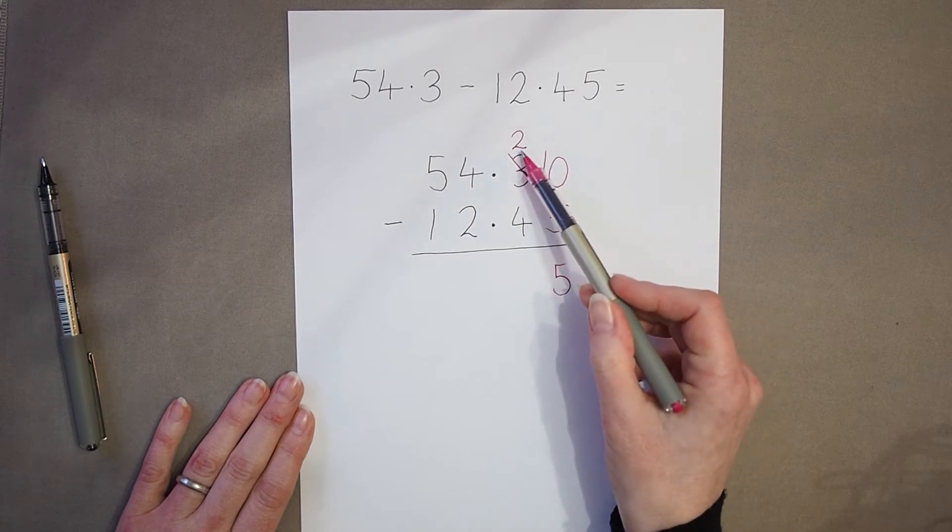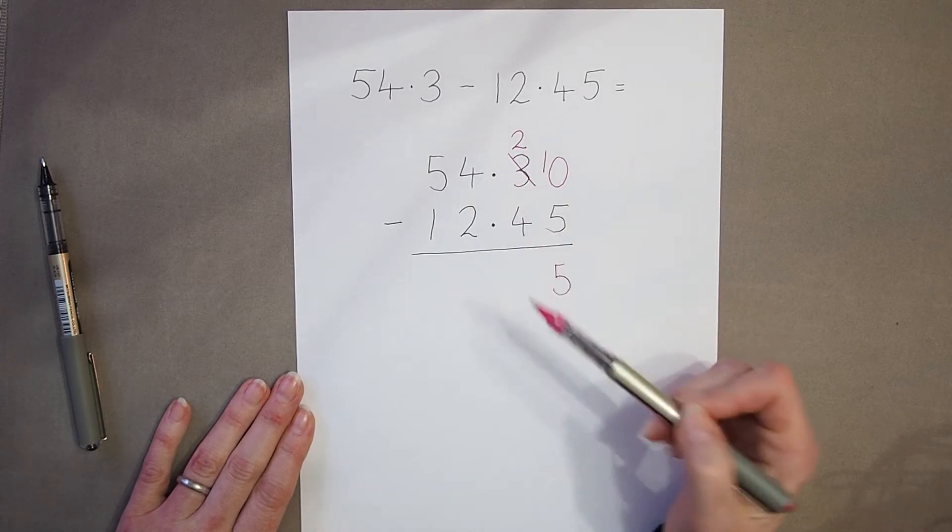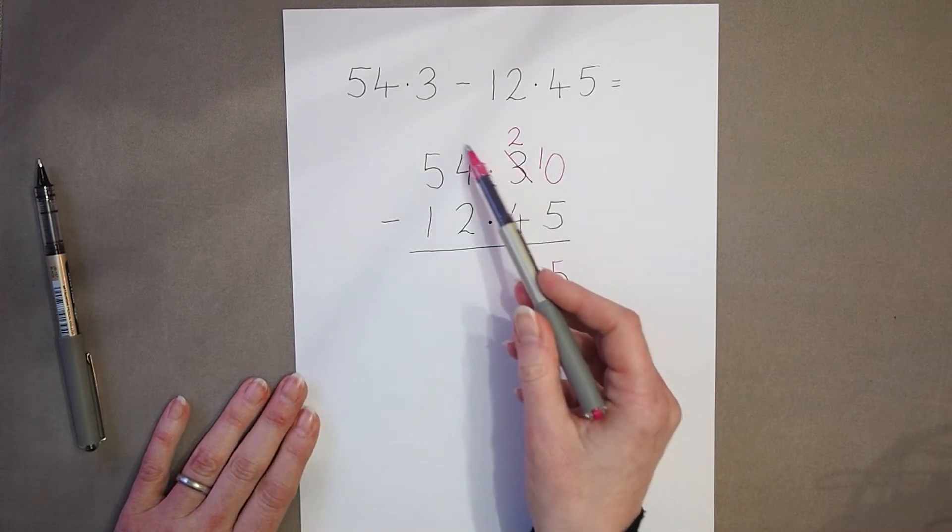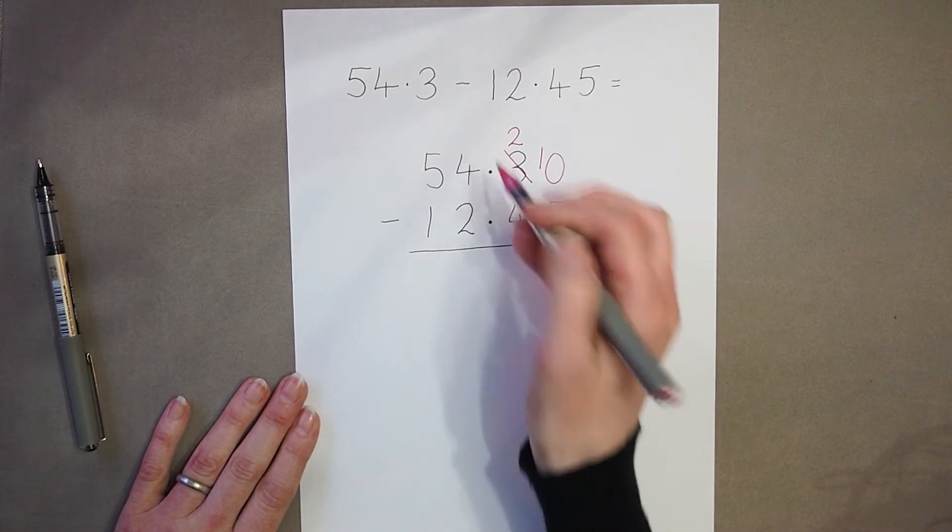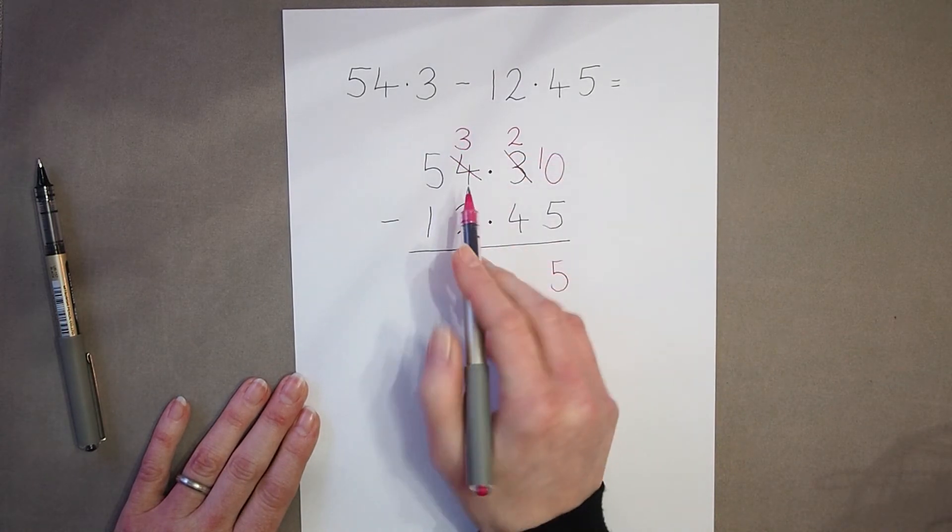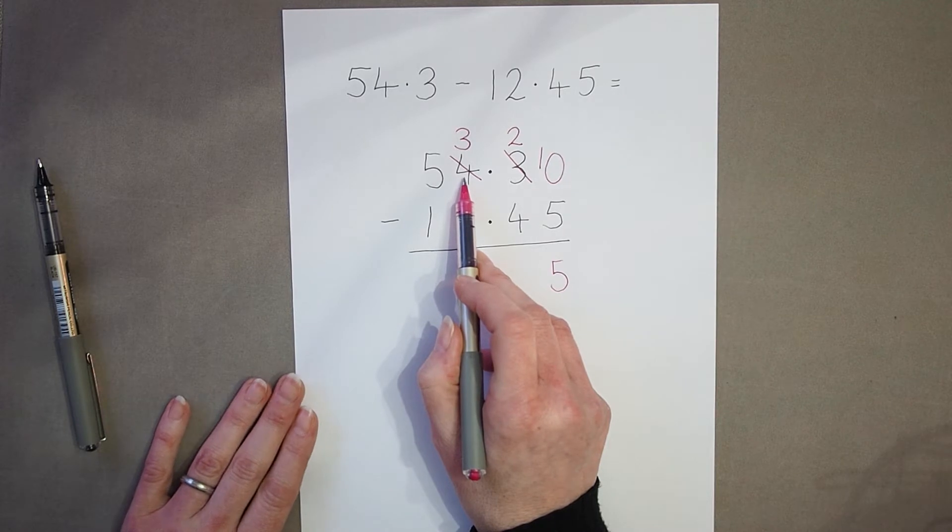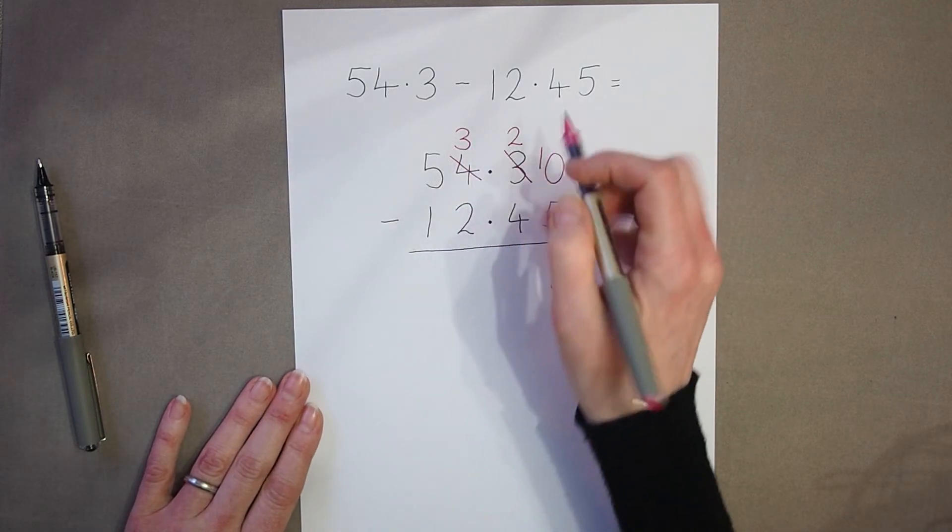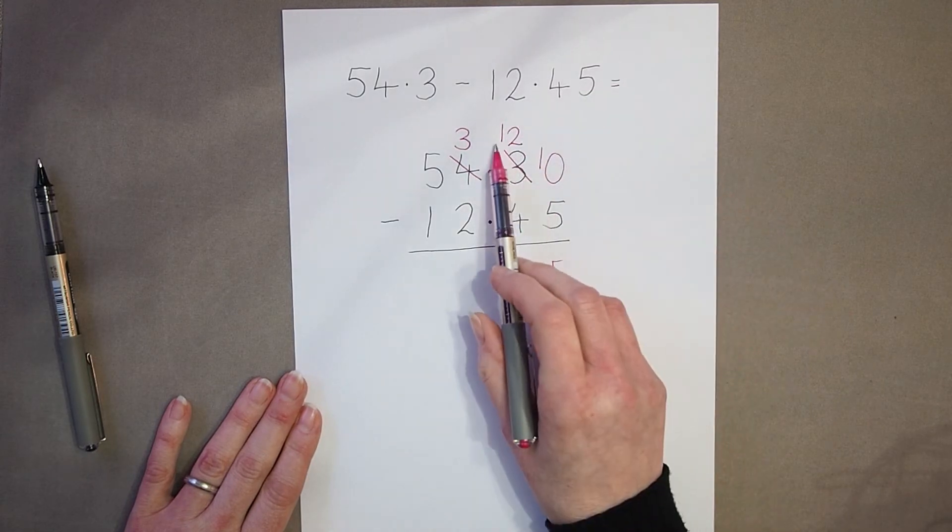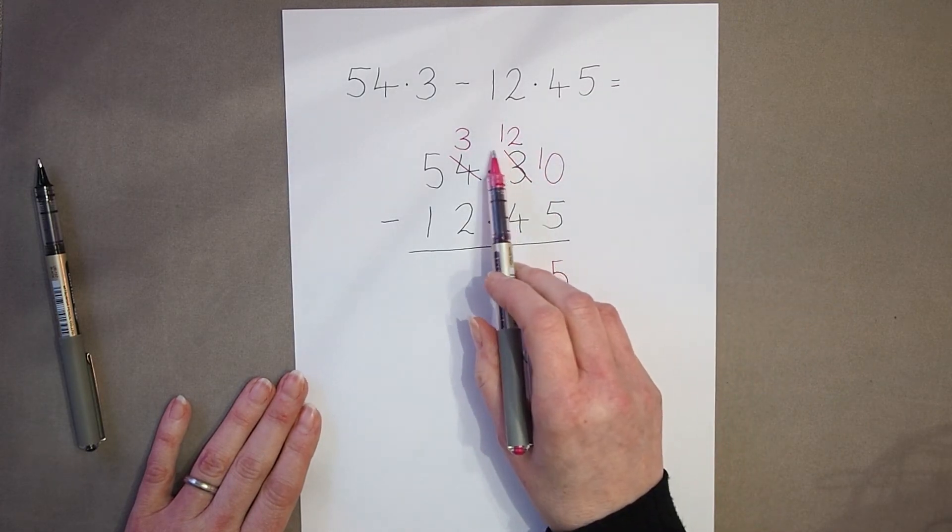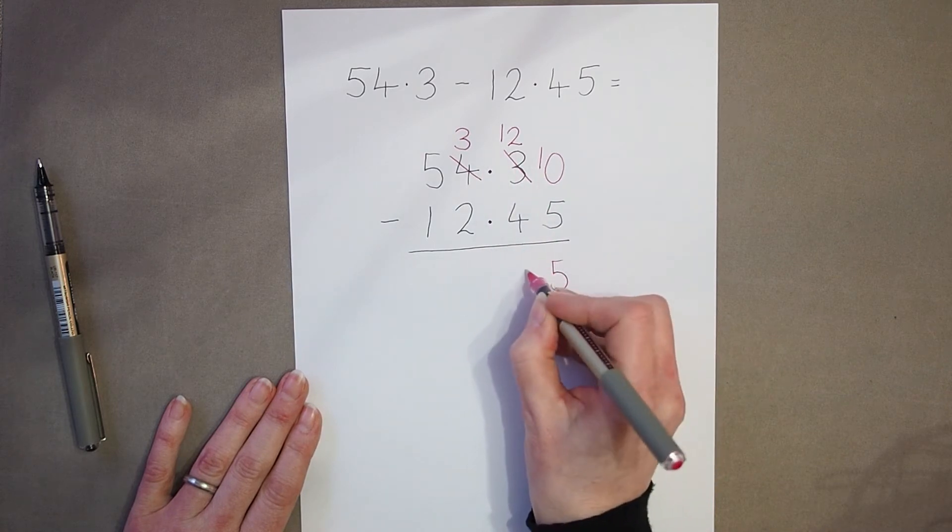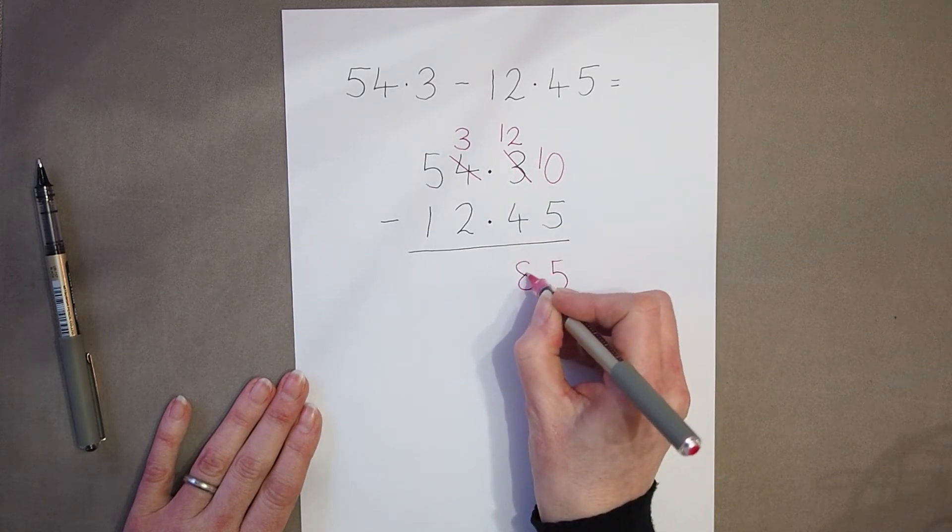Now I look at my tenths column. I've got two tenths take away four tenths. Again, I don't have enough tenths. So I look to the next column, which is now my units column. I can take one of my units, leaving three left. And I can put that unit into my tenths column. There's my one unit going in. A unit is the same as ten tenths. So now I've got twelve tenths. Take away four tenths is eight tenths.